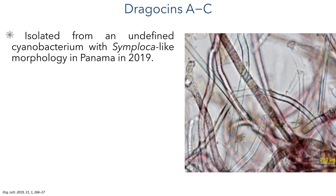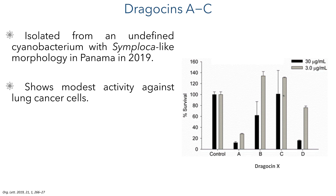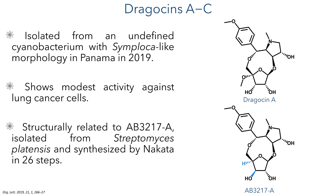These compounds were first isolated from a cyanobacterium collected off the coast of Panama in 2019. The team could not conclusively identify the species of bacteria; however, they note that it has a symploca-like morphology. These compounds show a modest activity against lung cancer cells, and structurally they are related to a compound isolated from Streptomyces platensis, which was previously synthesised in 26 steps by the Nakata Group.